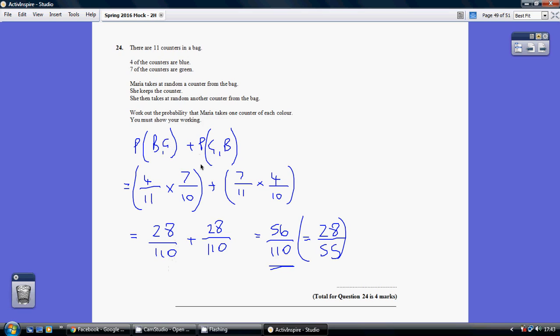Alternatively, the other way we can get one of each color is a green and then a blue. A green with the first pick would be 7 out of 11, and then a blue would be 4 out of 10 for the second pick. So again, top times bottom, 28 out of 110.